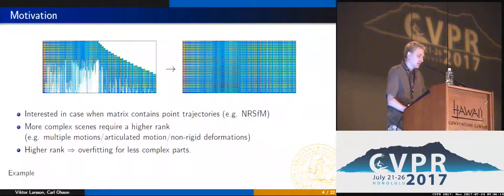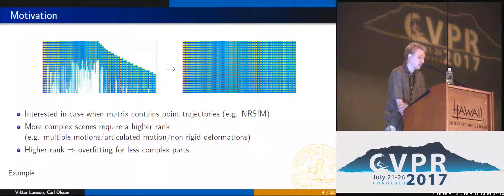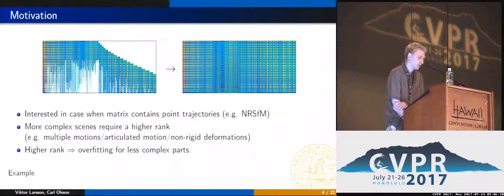In this paper, we are mostly interested in the case when the matrix contains point trajectories — for example, a non-rigid structure for motion. In this setting, when you have more complex scenes, you will require a higher rank to model it. This can be, for example, if you have multiple motions in your scene, or if you have articulated motion or other non-rigid deformations.